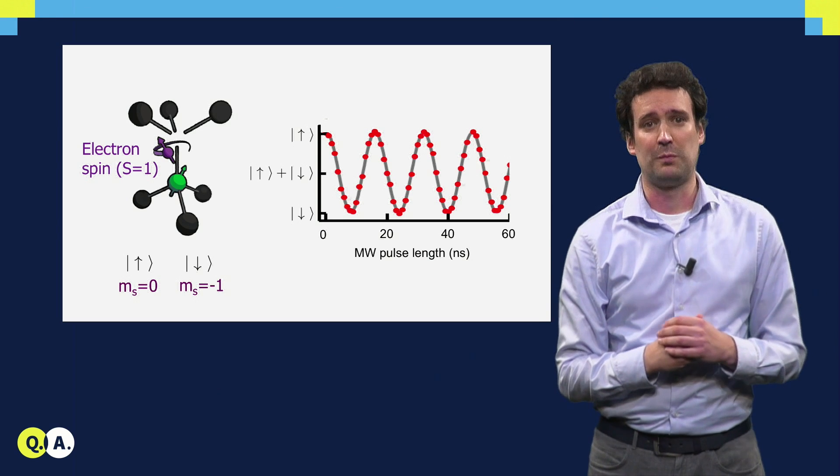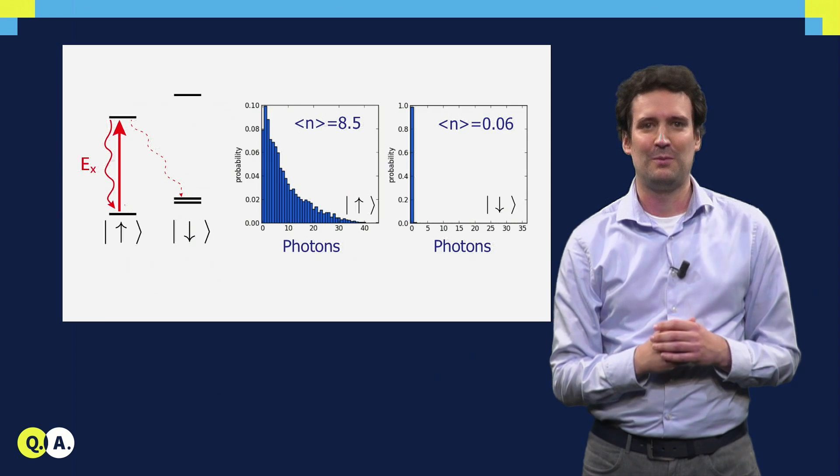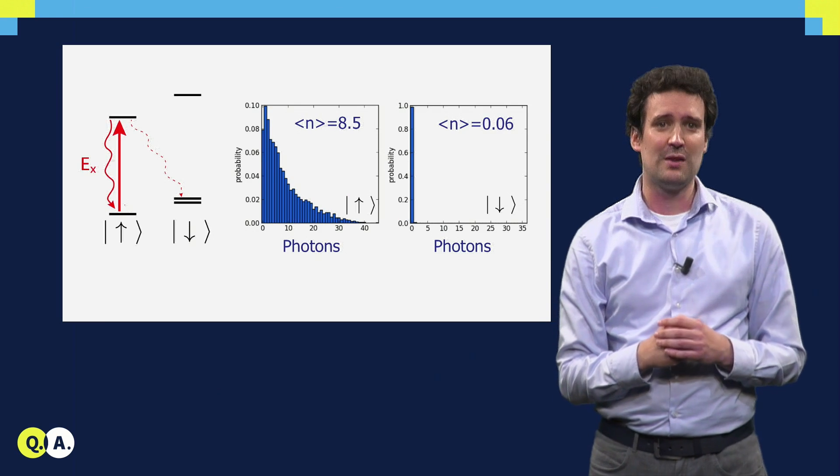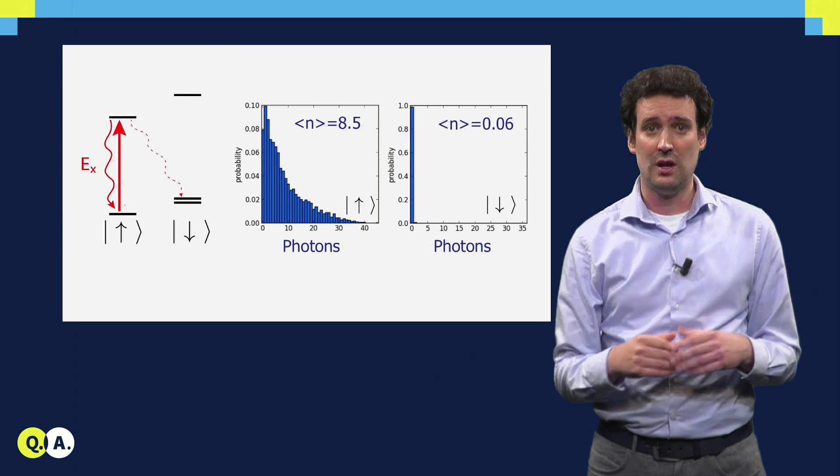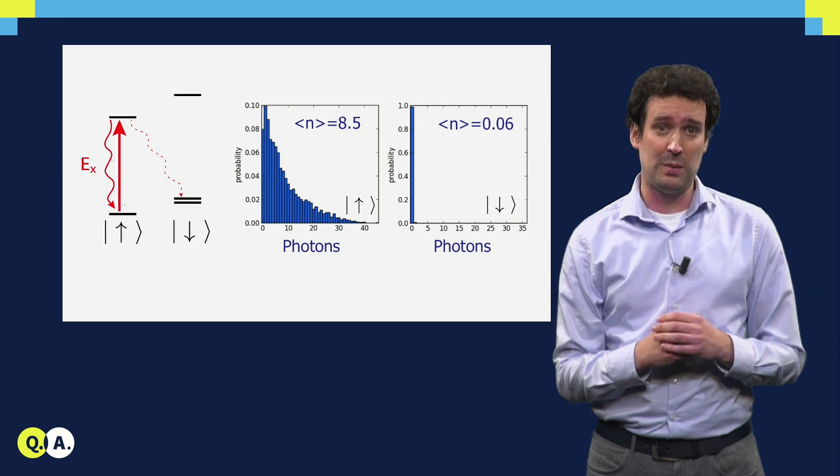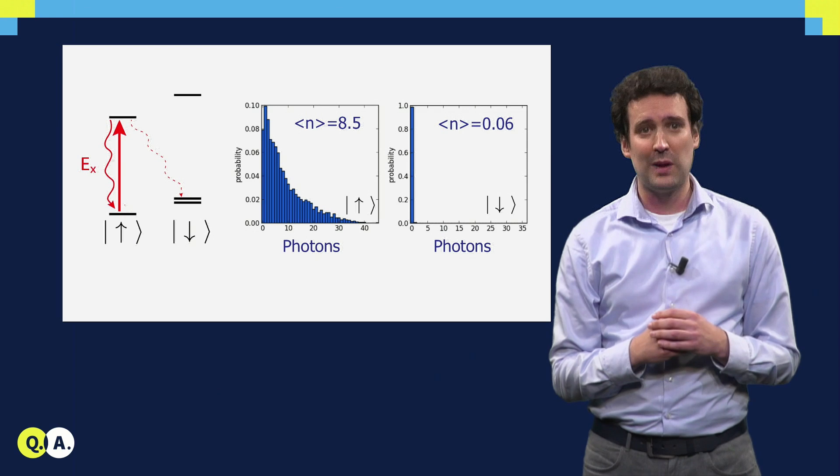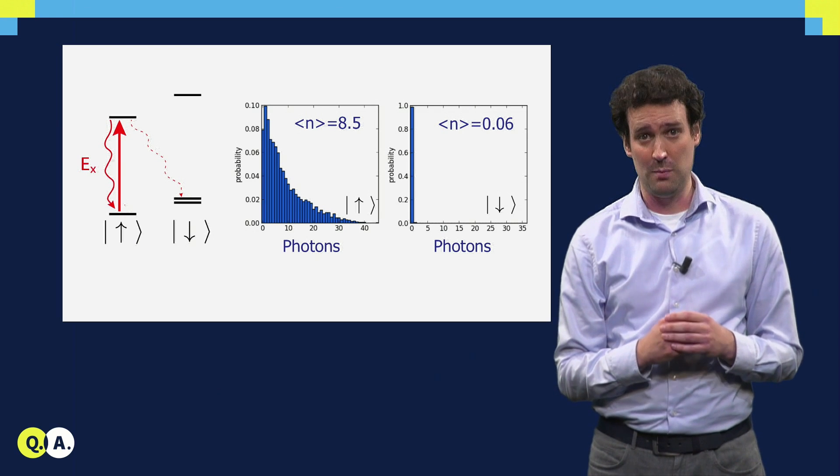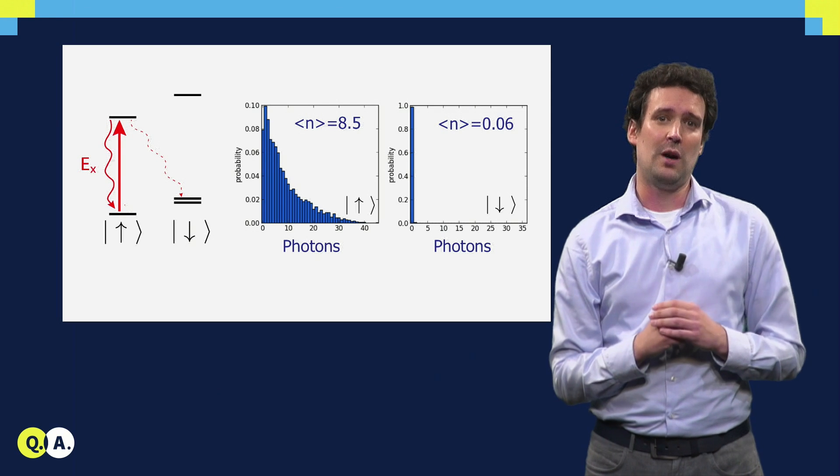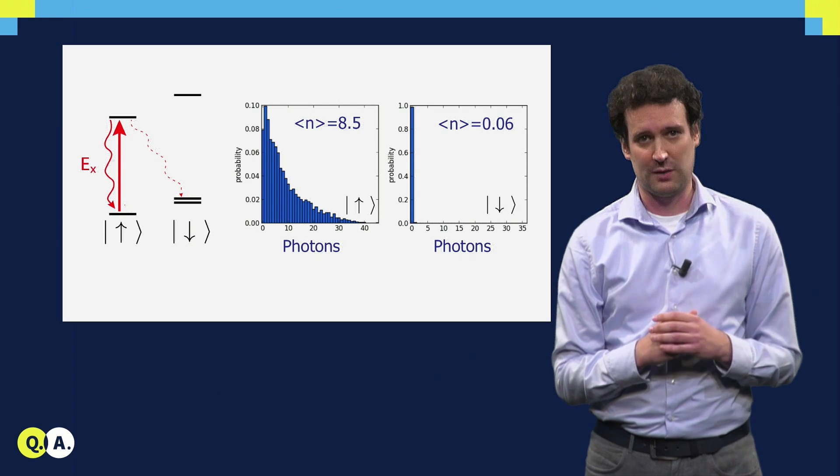How can we measure what the state of the spin is? For that we use optics. The idea is really quite simple. There are different optical transitions in the NV center, which are associated to different spin states. So if we apply a laser pulse that is only resonant with the transition for spin up, then only when the spin is up, we excite the NV center and we detect photons.